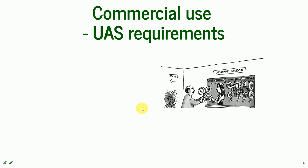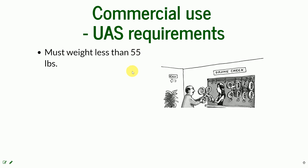Also, not only the pilot has special requirements, but the vehicle, the UAS itself, must weigh less than 55 pounds at the time of operation. So if you have a UAS that weighs close to 55 pounds and want to use it with a payload, and the total weight of the vehicle with the payload will exceed 55 pounds, this is violating the Part 107 rule.